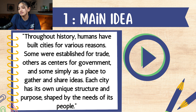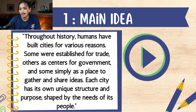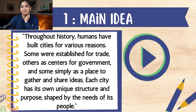Throughout history, humans have built cities for various reasons. Some were established for trade, others as centers for government, and some simply as a place to gather and share ideas. Each city has its own unique structure and purpose, shaped by the needs of its people. What is the main idea of this passage? A. Cities have always been used for the same purposes. B. Cities are designed based on the needs of their people. C. Trade is the primary reason humans build cities. D. Government decides where the cities should be built. Take a minute to pause the video and figure out which option you think is correct.